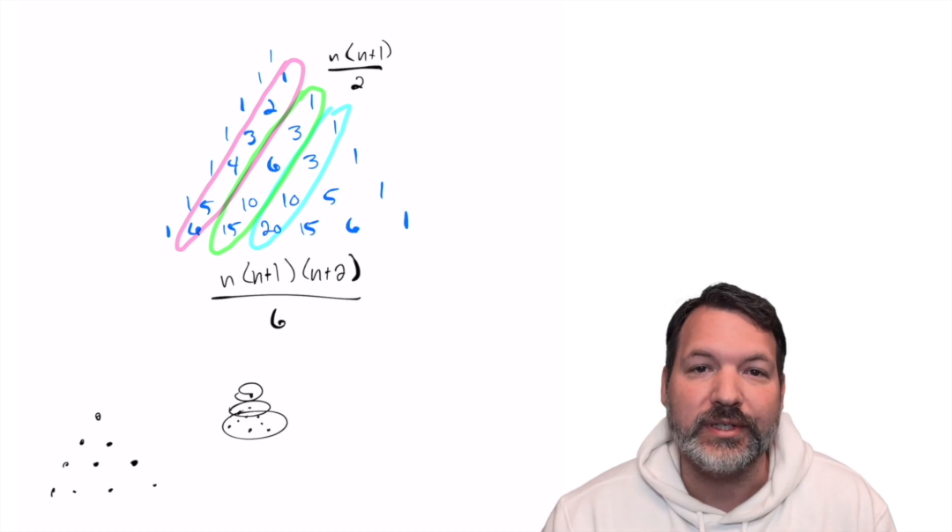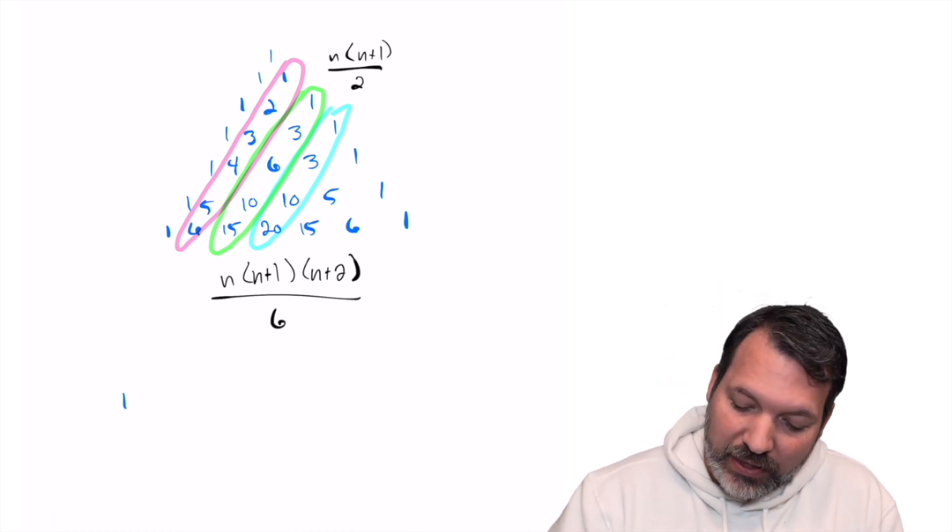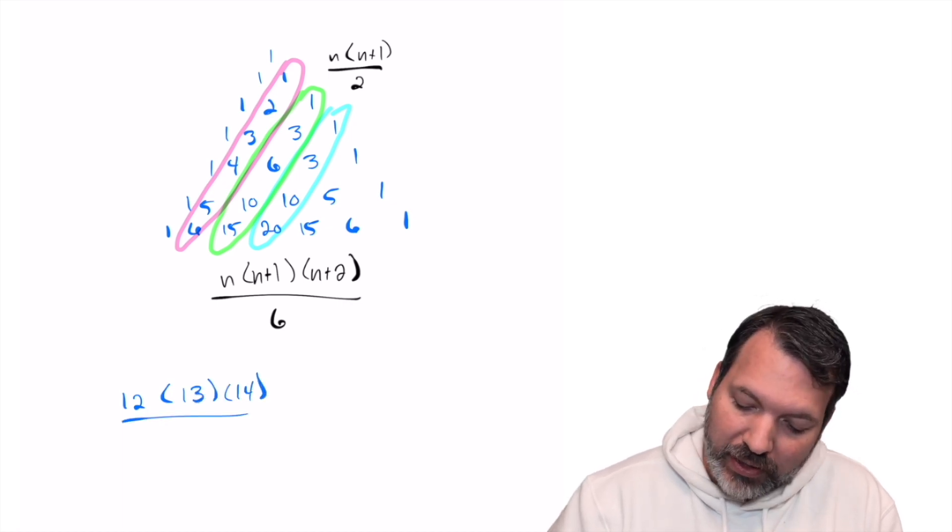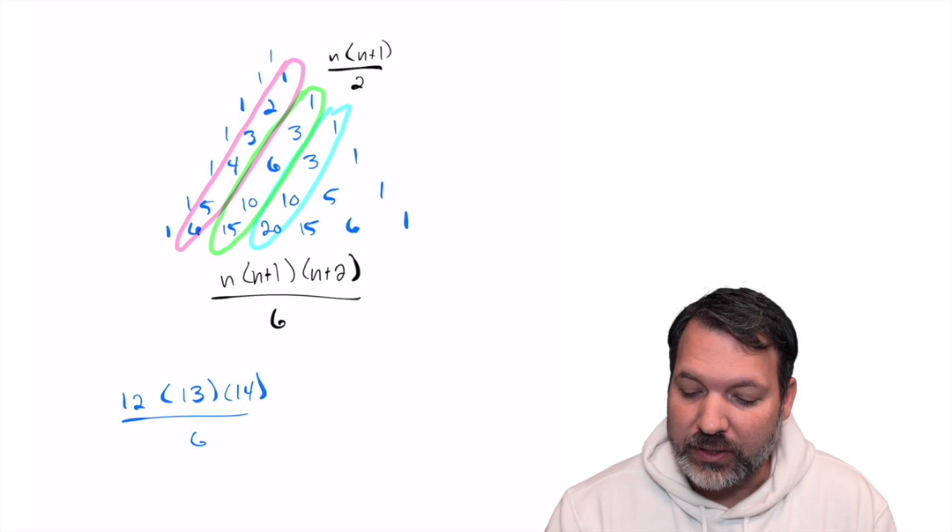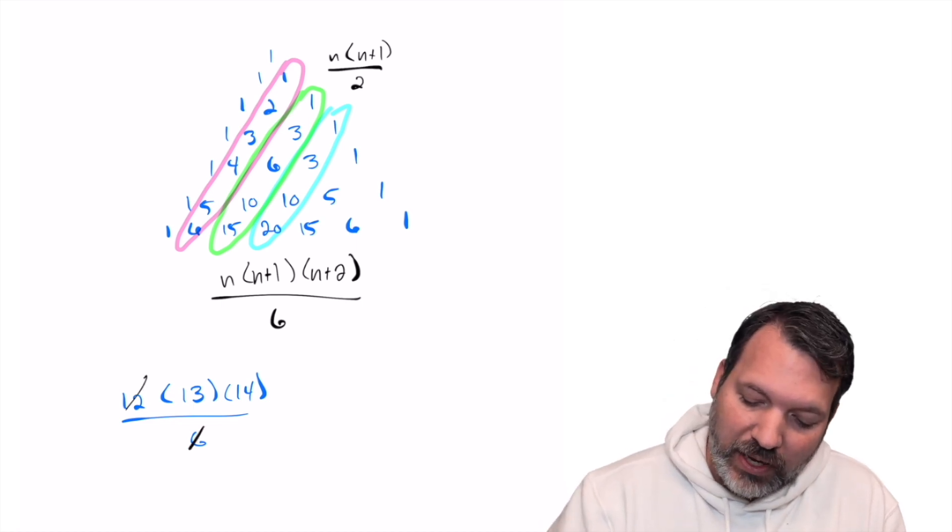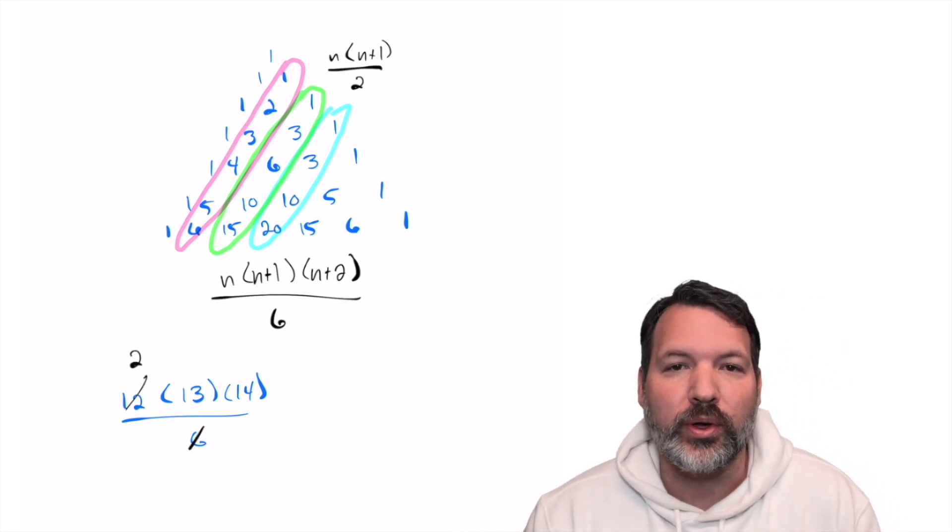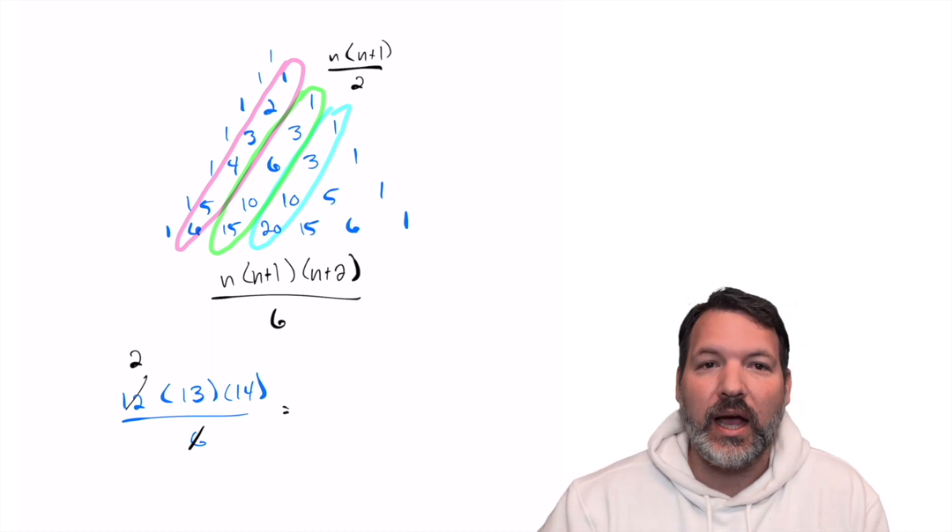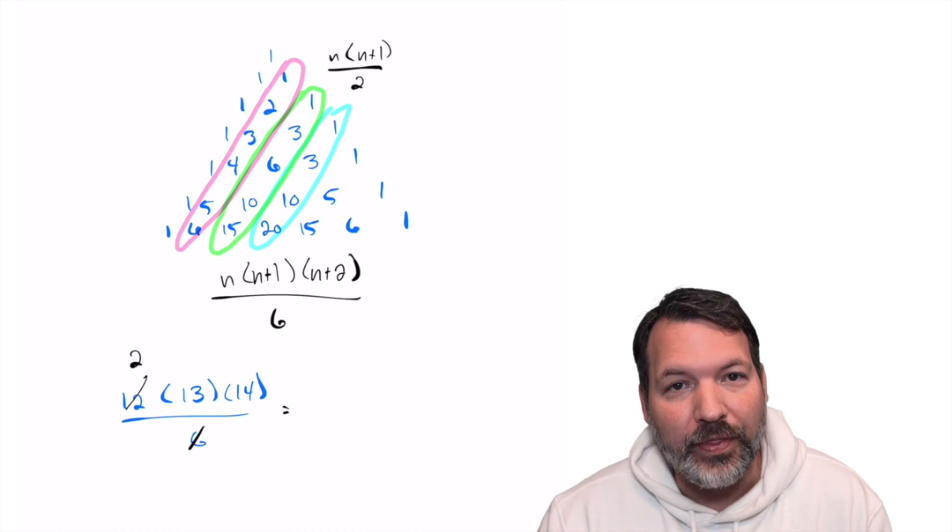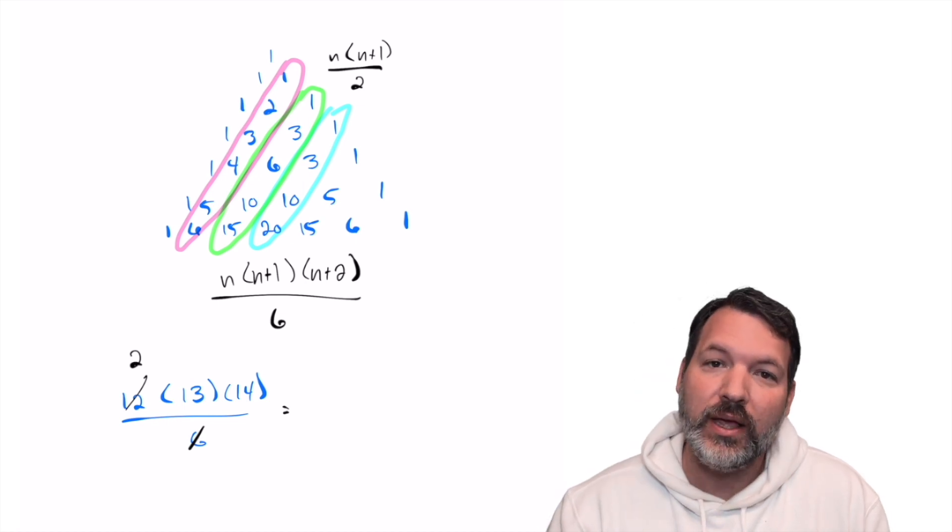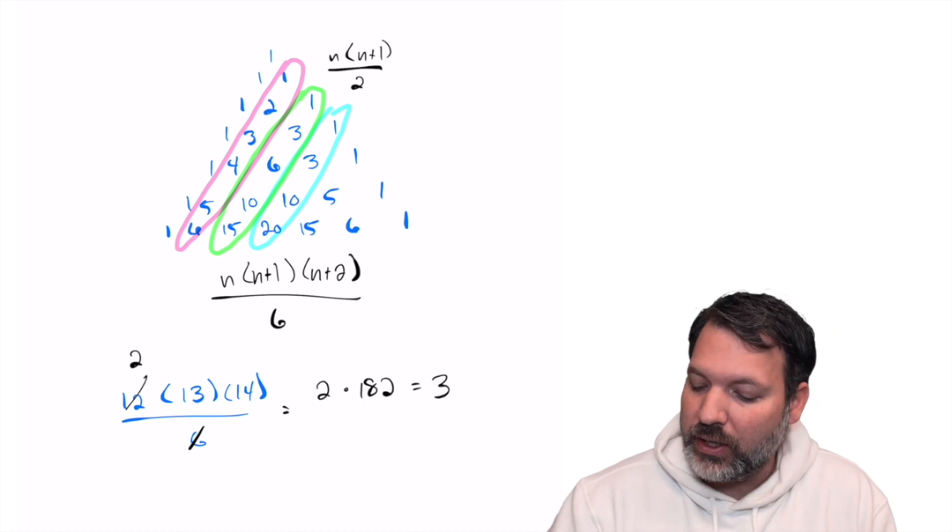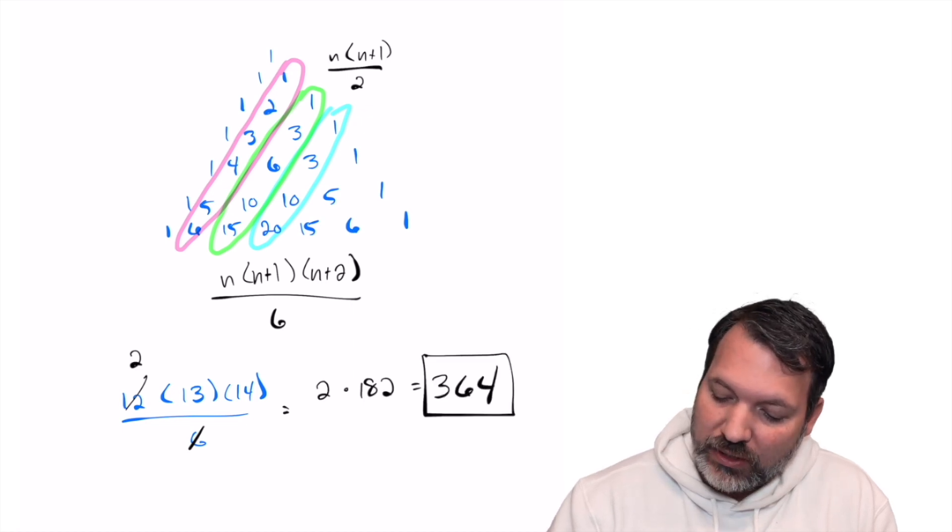For our 12 days of Christmas case, that is, we're going to take 12, increase it by one, increase it by two, and divide this whole thing by six. We can do some nifty cancellation once again, and we end up with twice the product of 13 times 14. 13 squared is 169. One extra 13 beyond that would be 13 times 14, so that's 182. And then two times 182 gives us 364.